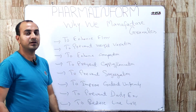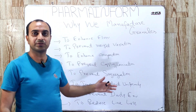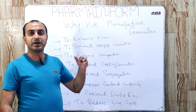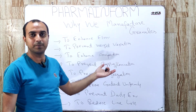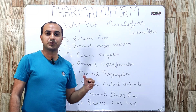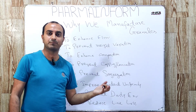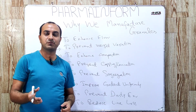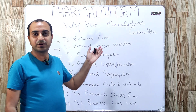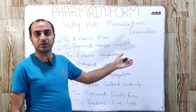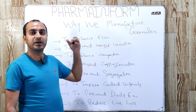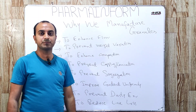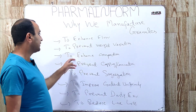The next one is to prevent weight variation. This point is related to the first point. As we discussed, by increasing the flow rate we can overcome many defects during the tablet compression process. If our flow is very poor, weight variation is observed. So, by converting fine powders into granules the flow is increased, and by enhancing the flow our weight variation defect is prevented.